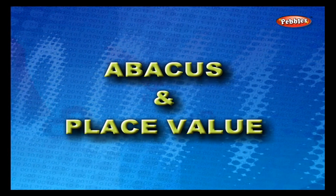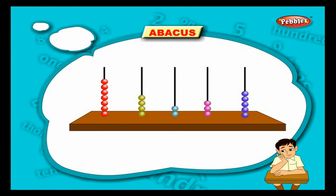Abacus and place value: this is an abacus. It has a wooden board as a base with wires which have balls sliding on it. Each wire has different colors of balls to represent different place values of numbers. Let us learn the place value of numbers with the help of it.